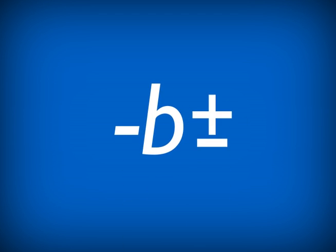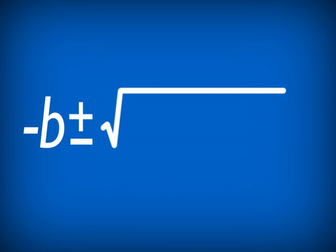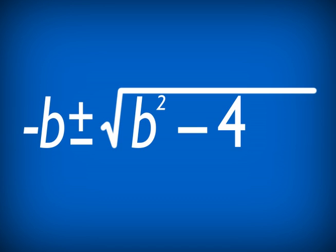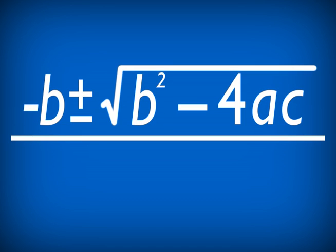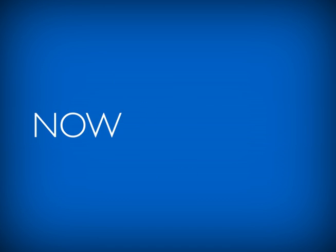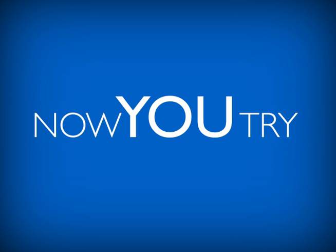The quadratic formula is negative b, plus or minus the square root of b squared minus 4ac, all over 2a. Now you try.